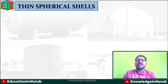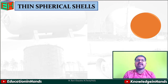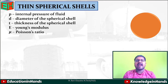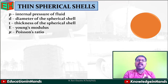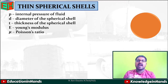Now in this video we will see about thin spherical shells. I am considering a spherical shell which has an internal diameter d and thickness t. It belongs to the group of thin cylinders and shells where the t value is less than d/20. It is subjected to an internal fluid pressure p. For material properties, we consider Young's modulus as E and Poisson's ratio as μ.